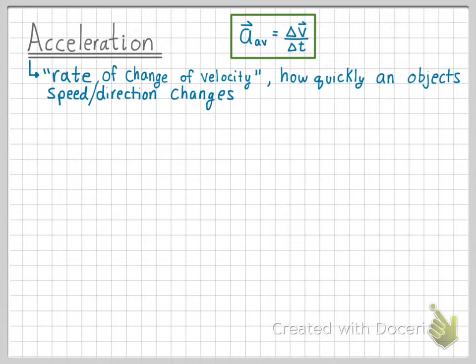Our equation for average acceleration looks very similar to our equation for average velocity, but instead of change in position in the numerator, we have change in velocity. As you can see, the variable that we use to represent acceleration is a lowercase a with an arrow over it. This means that acceleration is a vector, so direction matters.